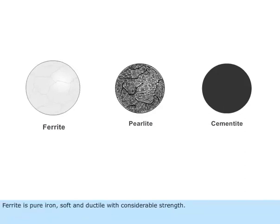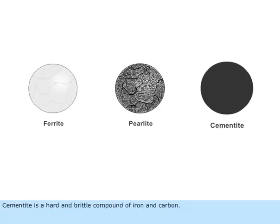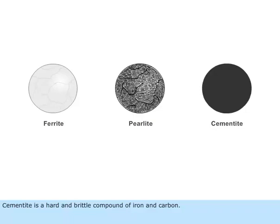Ferrite is pure iron, soft and ductile with considerable strength. Cementite is a hard and brittle compound of iron and carbon.